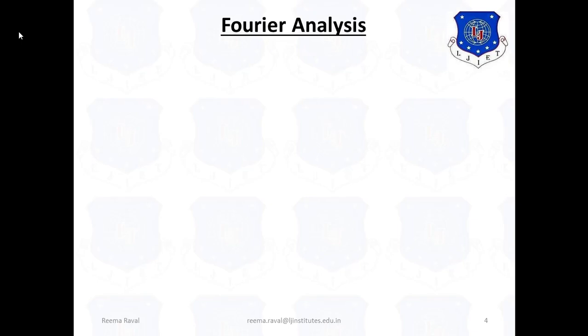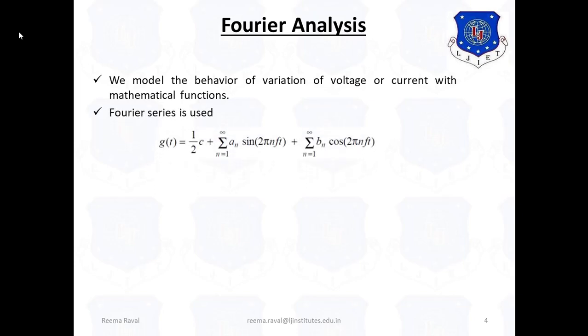In early 19th Century, the French Mathematician proved that any reasonably behaved periodic function with period T can be considered as a sum of number of sines and cosines. We model the behavior of variation of voltage or current with mathematical functions. And the Fourier Series is used, and the Fourier Series is given as G(t) = 1/2 c + summation n=1 to infinity An sin(2πnft) + summation n=1 to infinity Bn cos(2πnft).